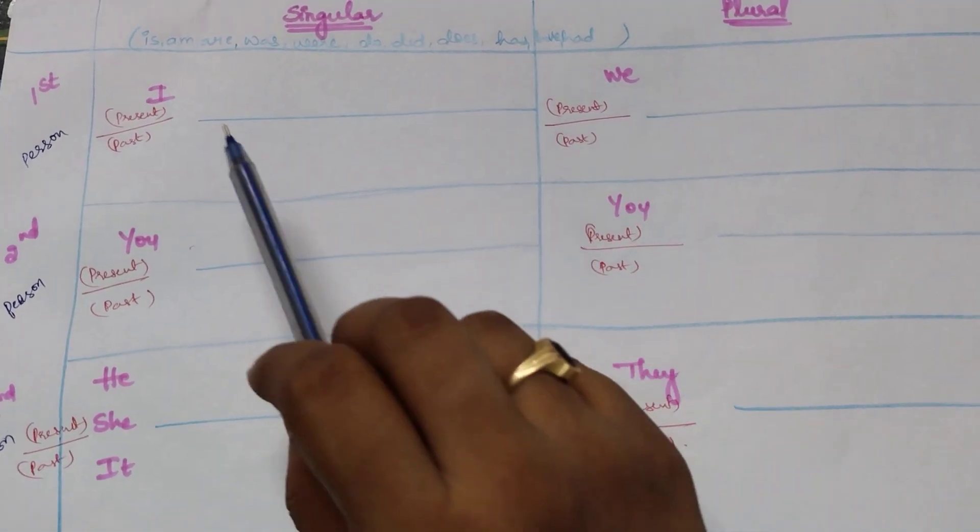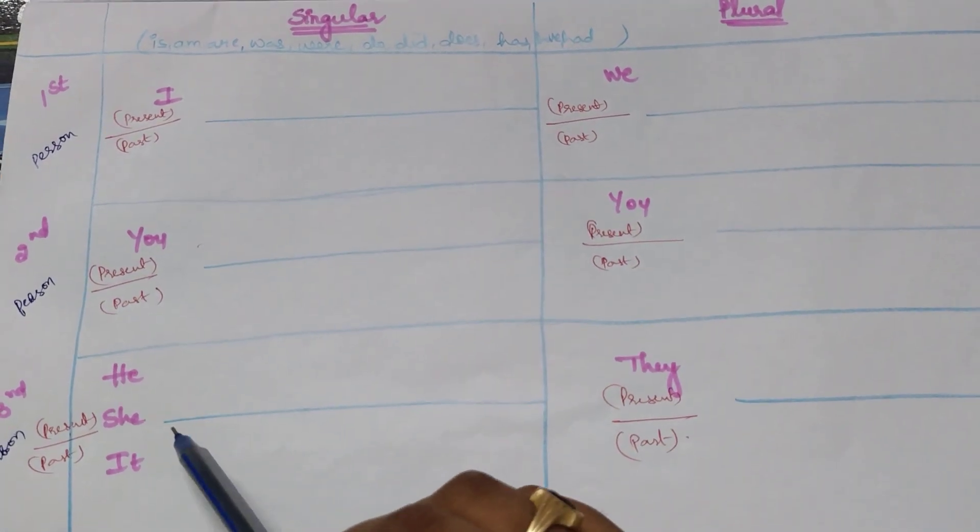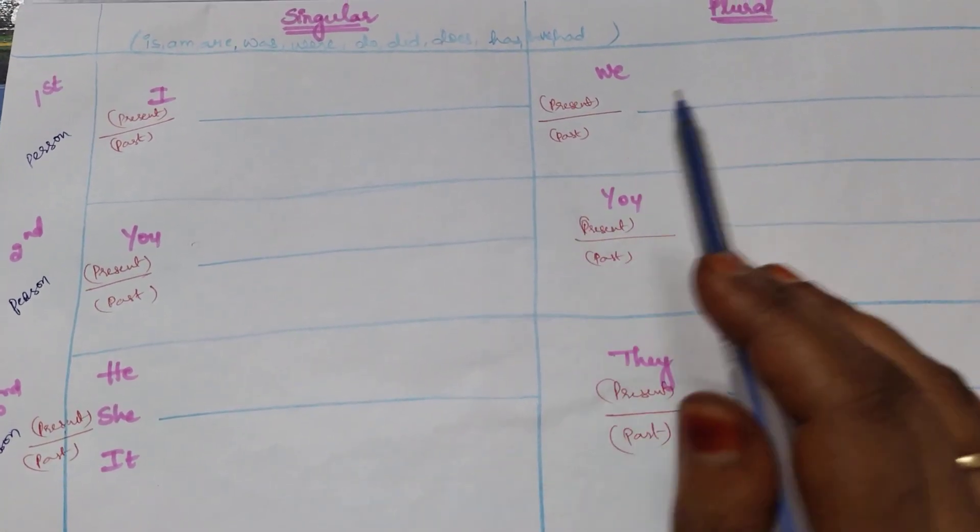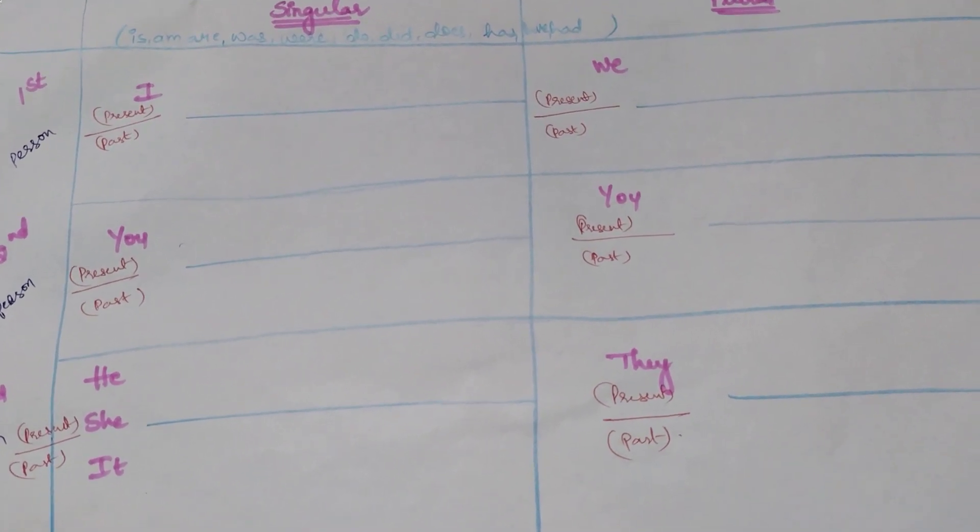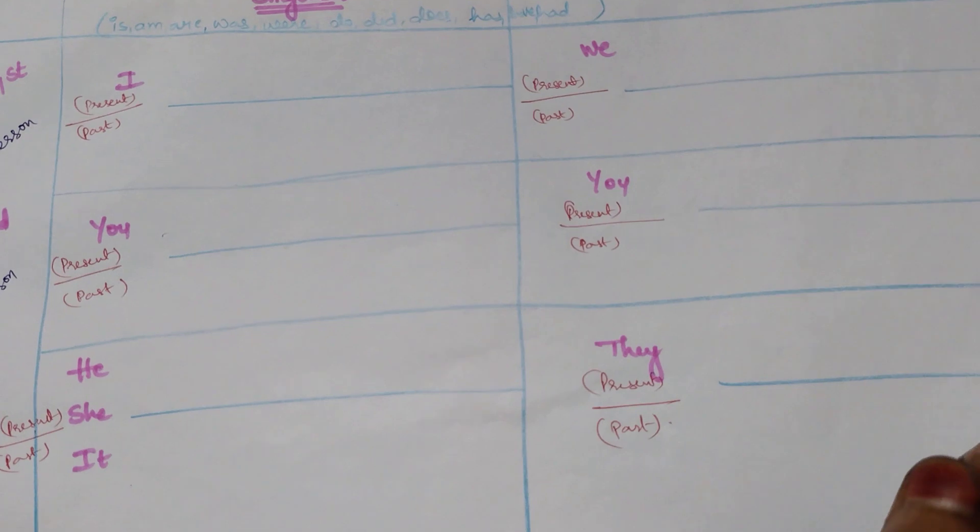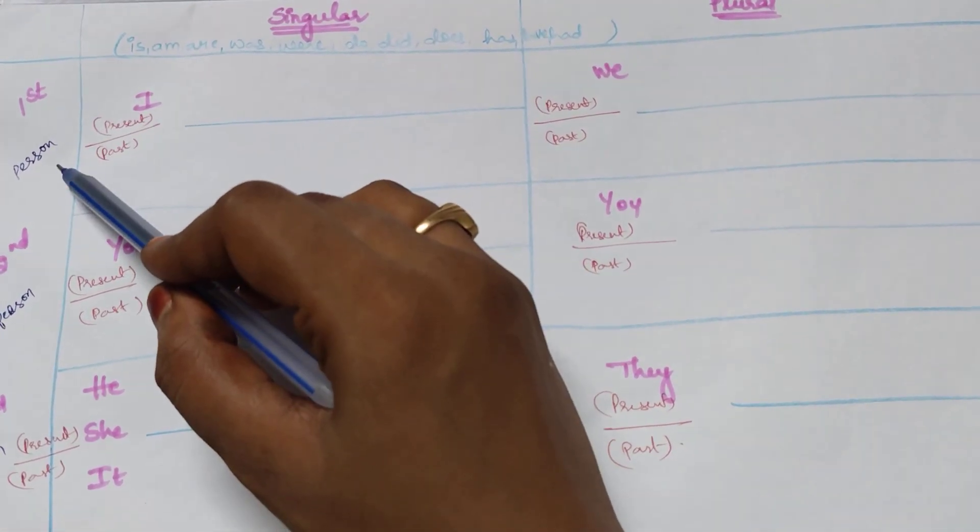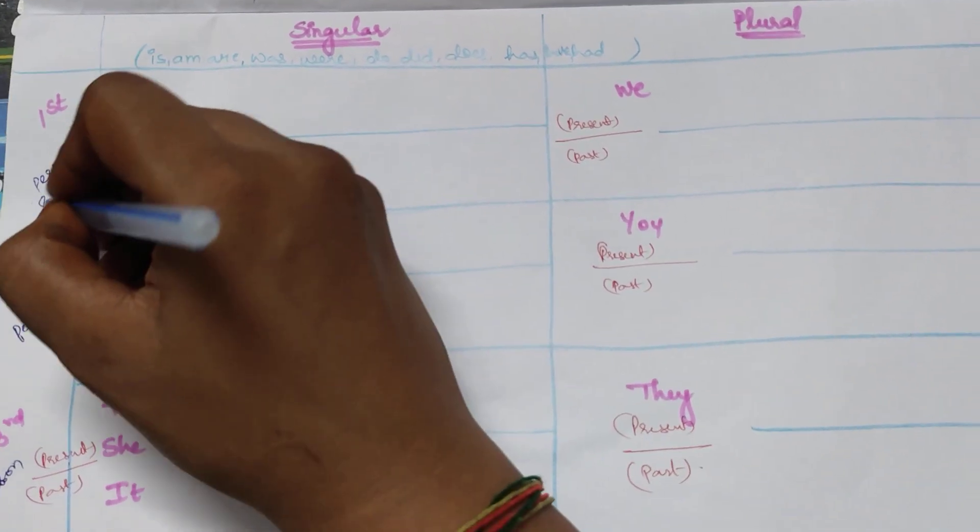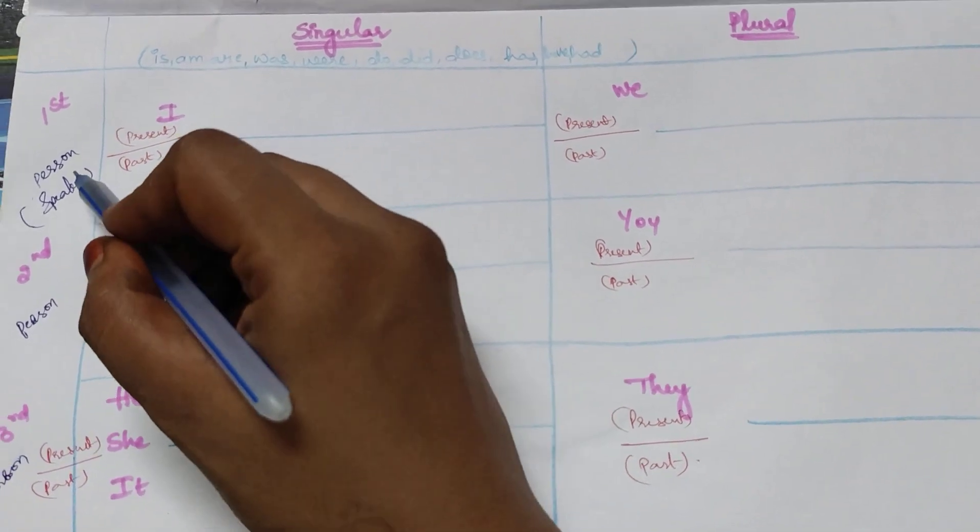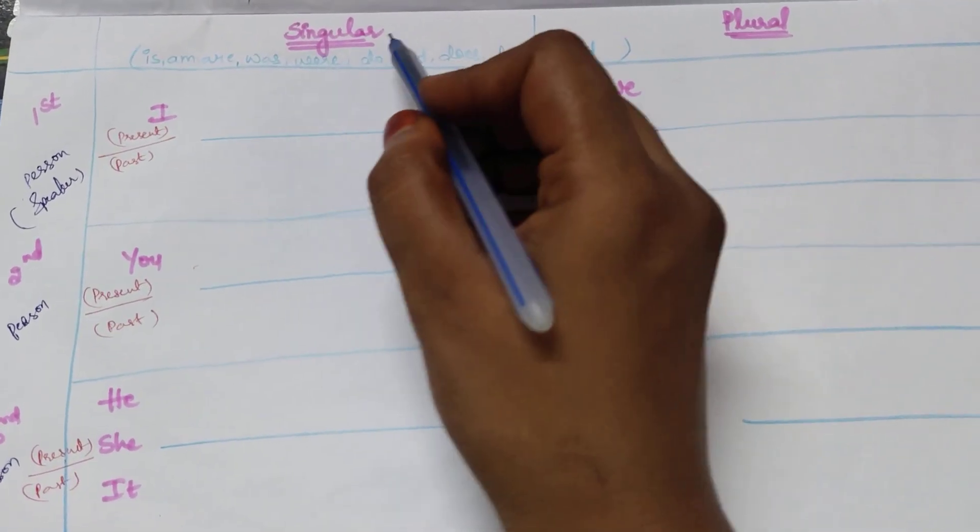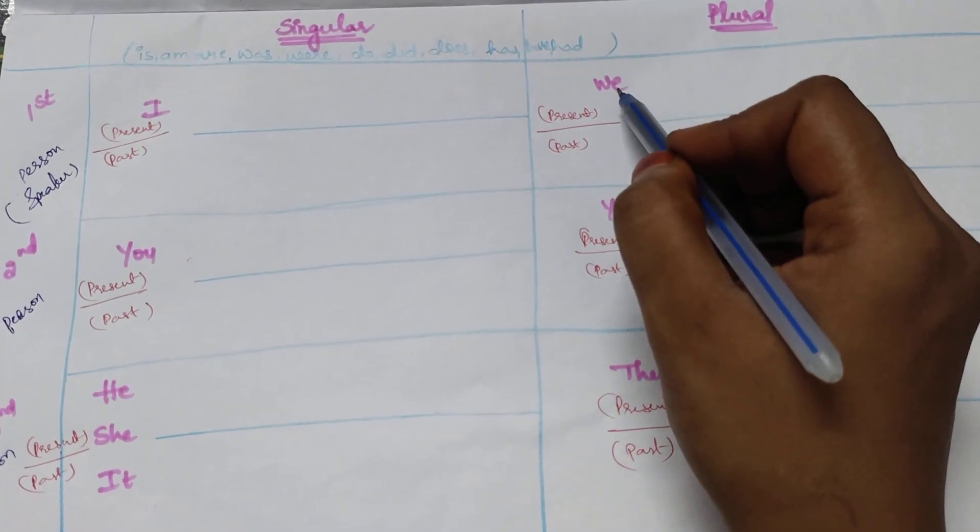Instead of nouns, we use pronouns. So here I, we, you, he, she, it, they are the pronouns used instead of subject. Suppose I did the work. What is the subject there? I. So first person will always be the speaker. Who is the first person? Whoever speaks. So one who speaks is called speaker. If it is singular, what is the subject? I. Plural, we.